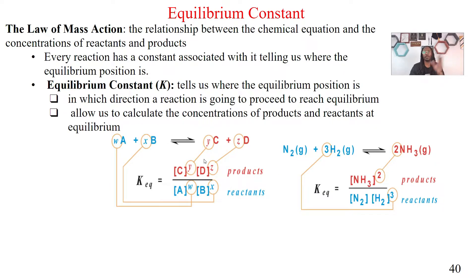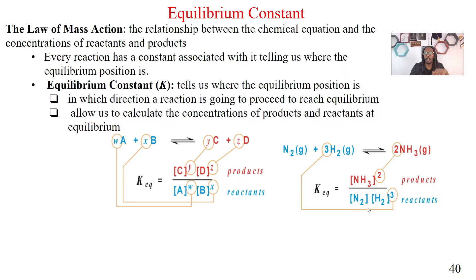Sometimes with all the letters it gets confusing, so let's just do an example. N₂ + 3H₂ gives me 2NH₃. How am I going to set this up for my equilibrium constant? Using the law of mass action, it's going to show me the relationship between my chemical equation and concentrations. So I put NH₃ — that's my product — over my reactants N₂ and H₂. Now for coefficients: NH₃ has a coefficient of 2, so it's NH₃ raised to 2. N₂ has an implied coefficient of 1, so we leave that as 1. H₂ has a coefficient of 3, so we raise that to 3.